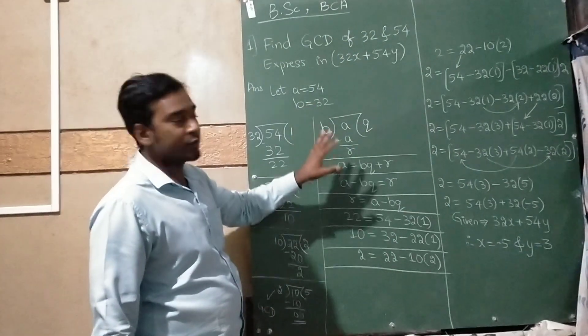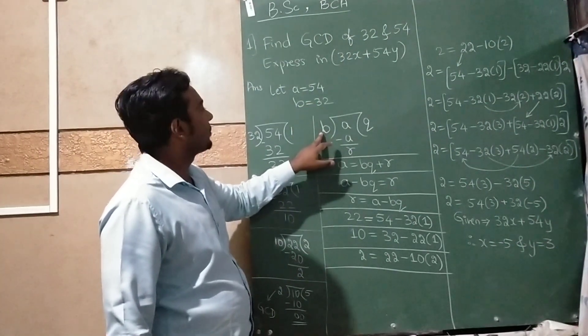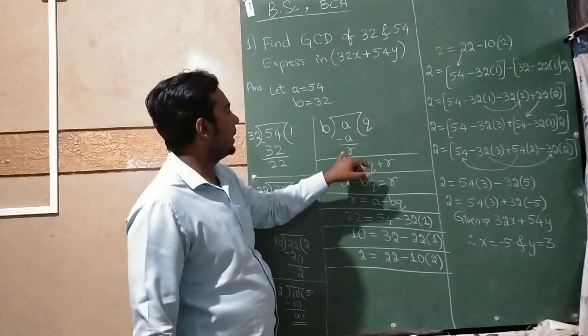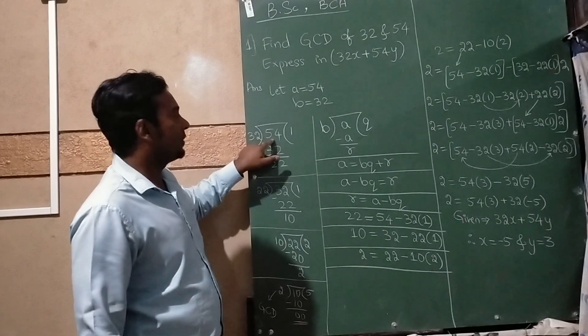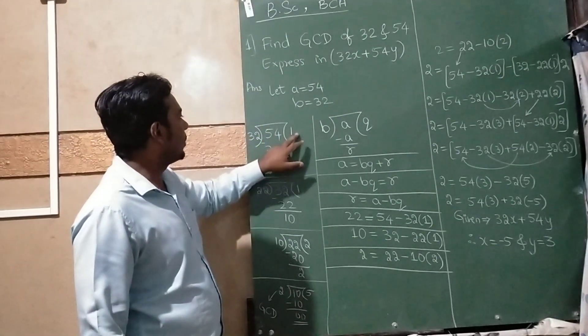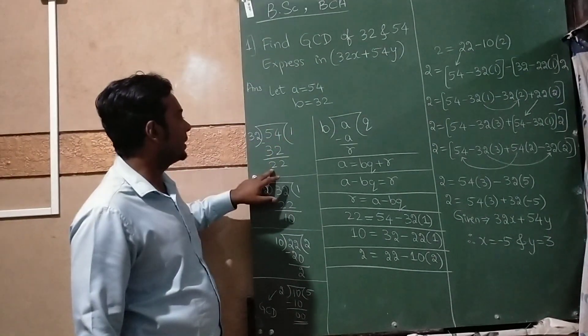The method of solving uses divisor, dividend, quotient, and remainder. I'm writing 32 outside, 54 here. 32 ones are 32, and if you subtract you get 22.